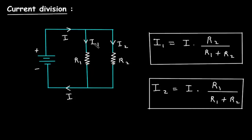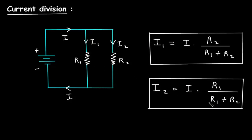If we have to find current I1 through R1, according to the current division rule, I1 is equal to total current I into the opposite branch resistance R2, divided by total resistance R1 plus R2. R2 is the opposite branch resistance because we are finding I1 and the opposite branch has R2. Similarly, to find I2, we multiply total current I by the opposite branch resistance R1, divided by R1 plus R2. This is the current division rule.